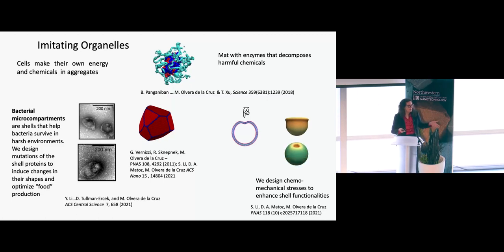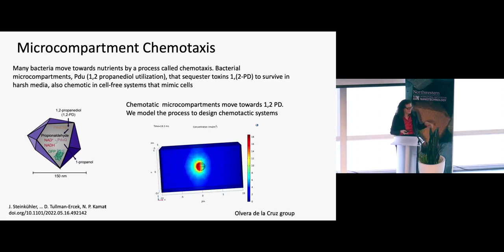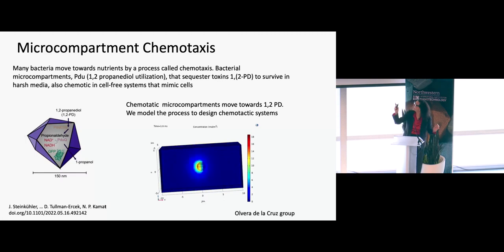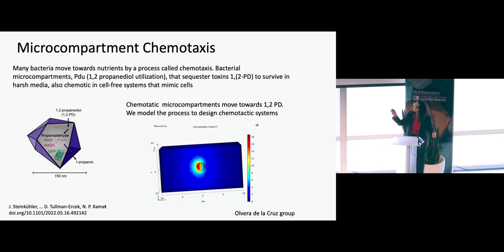These micro-compartments are about 150 nanometers in size—the bacteria is about 10 to 15 times larger. They have a property analogous to bacterial chemotaxis. My colleagues at Northwestern were able to encapsulate them in polymer vesicles and place the damaging component 1,2-PD on one side, showing that the vesicles move toward it just like bacteria move toward food or nutrients. They get the harmful material and convert it into a fuel, propane.